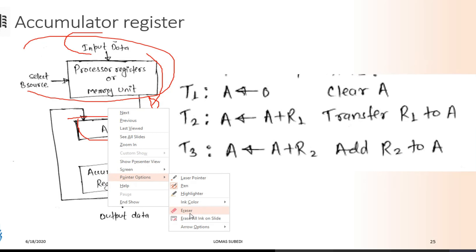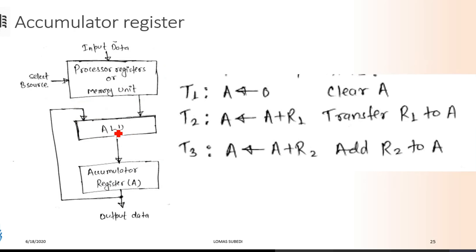The accumulator has significance — it stores the result of a variable, or an ALU variant. If the number of the accumulator is a column, it enables the result of the accumulator, and this will be the result of the accumulator.